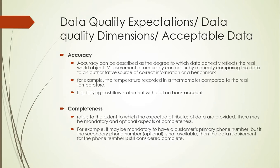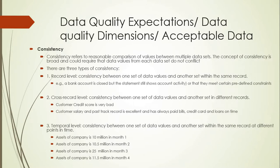Completeness means all mandatory attributes should be present in the data. For example, if a customer's primary phone number is mandatory and secondary phone number is optional, completeness does not require all attributes to be present — only the mandatory ones. So if the primary phone number is present but the secondary phone number is absent, that dataset is still considered complete.